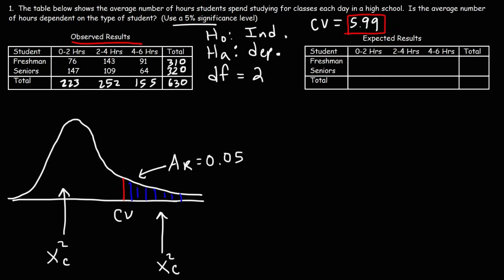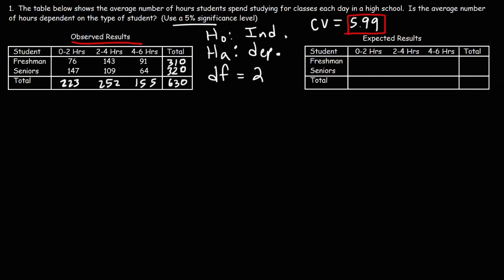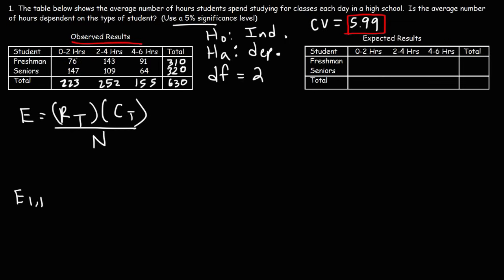Now the next thing we need to do is get the expected values to fill in this table. The formula is: expected value equals the row total times the column total divided by n. For entry E(1,1) — first row, first column — the row total is 310, the column total is 223, divided by n which is always 630. So 310 times 223 divided by 630 gives us 109.7, which we'll round to 110.